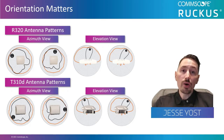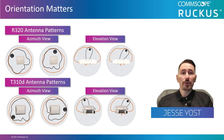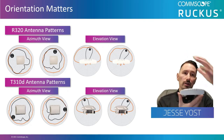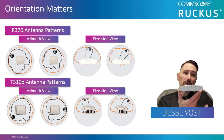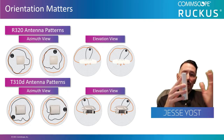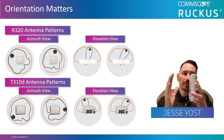In the case of the R320, it can be wall-mounted, ceiling-mounted, or placed on a tabletop surface, but you have to understand where the coverage is going to go. If I were to set this on a table, I would have coverage up here but not so much below where the AP is sitting. If I were to mount this on a wall, I would have coverage on this side of the AP, but not so much on the other side.